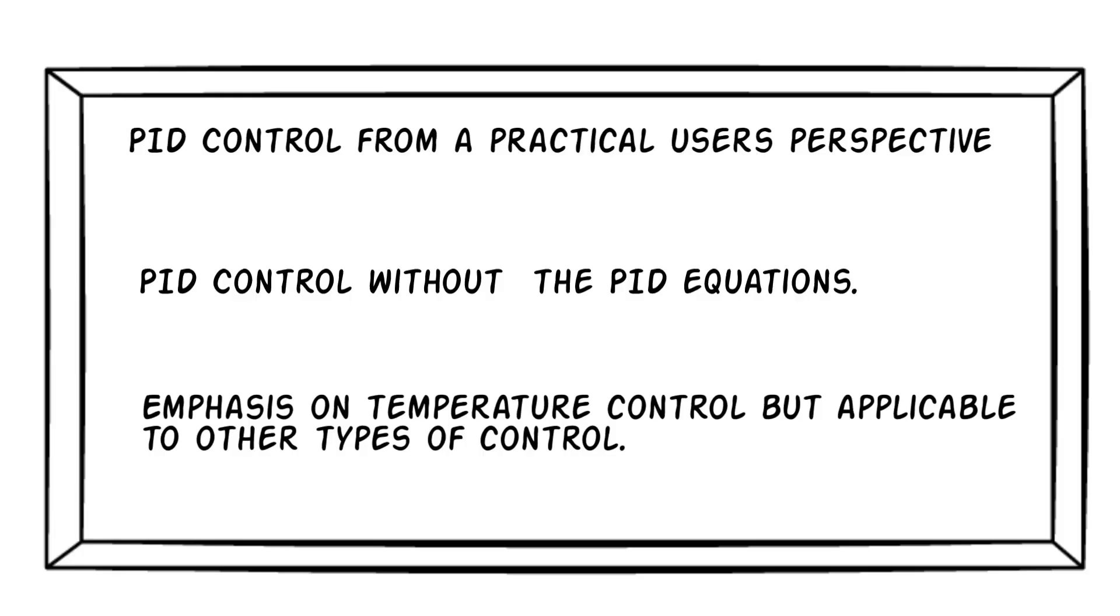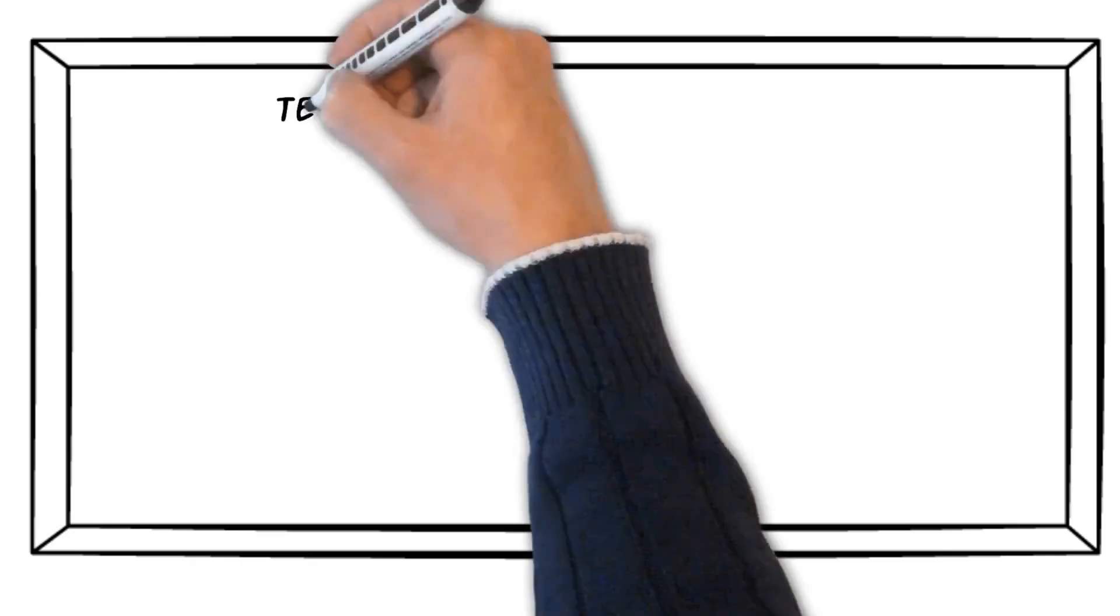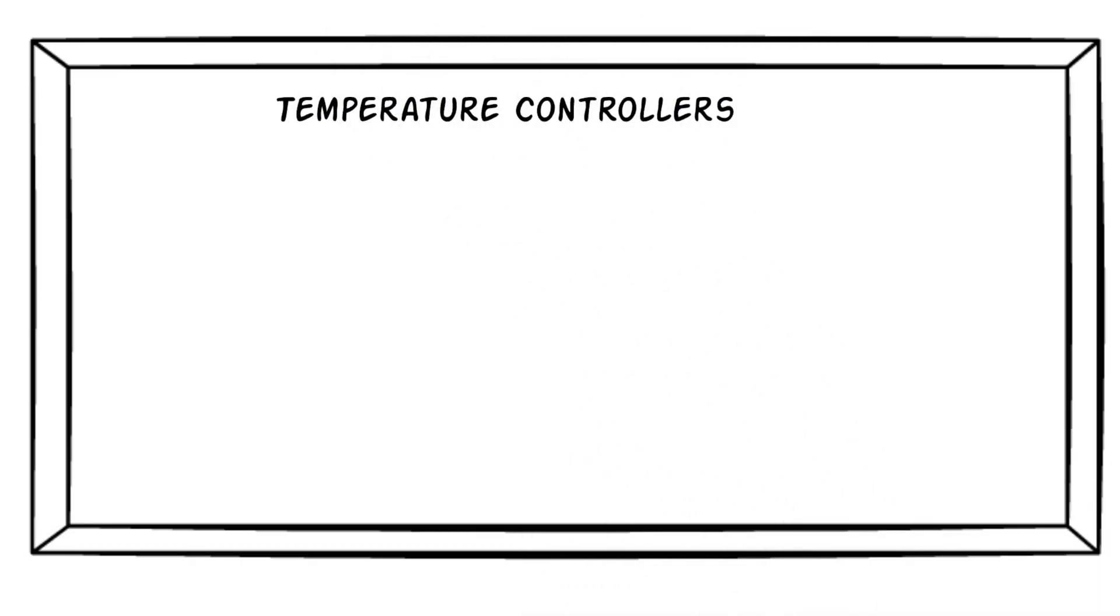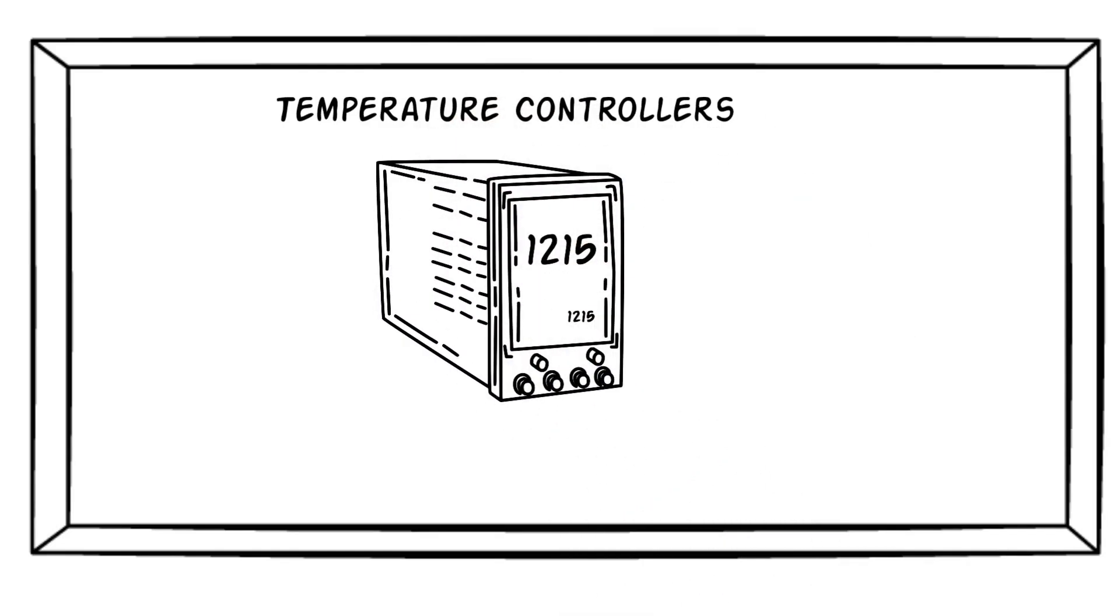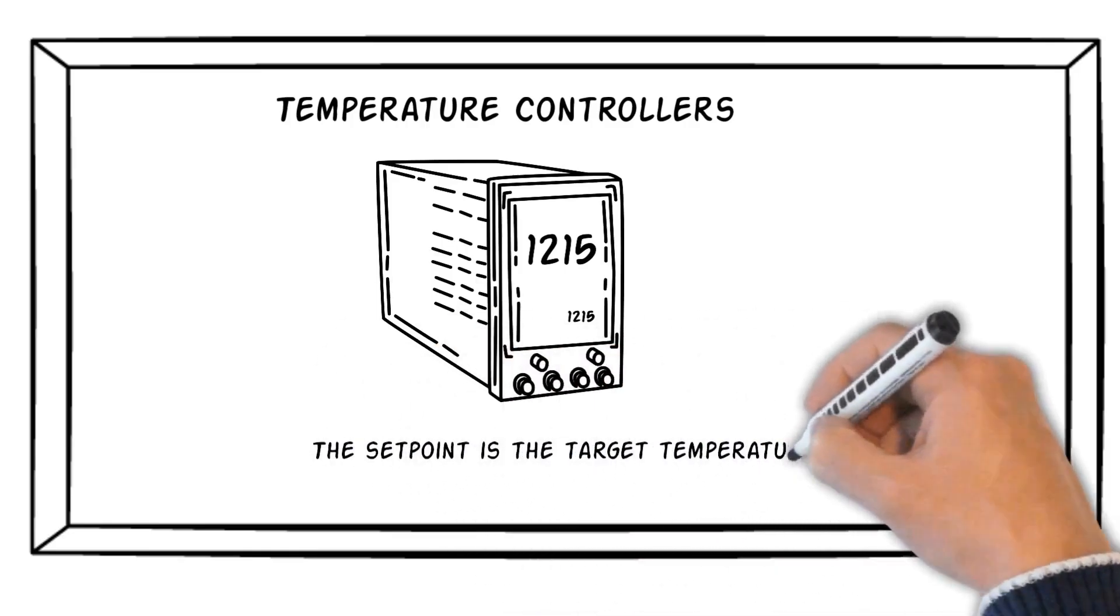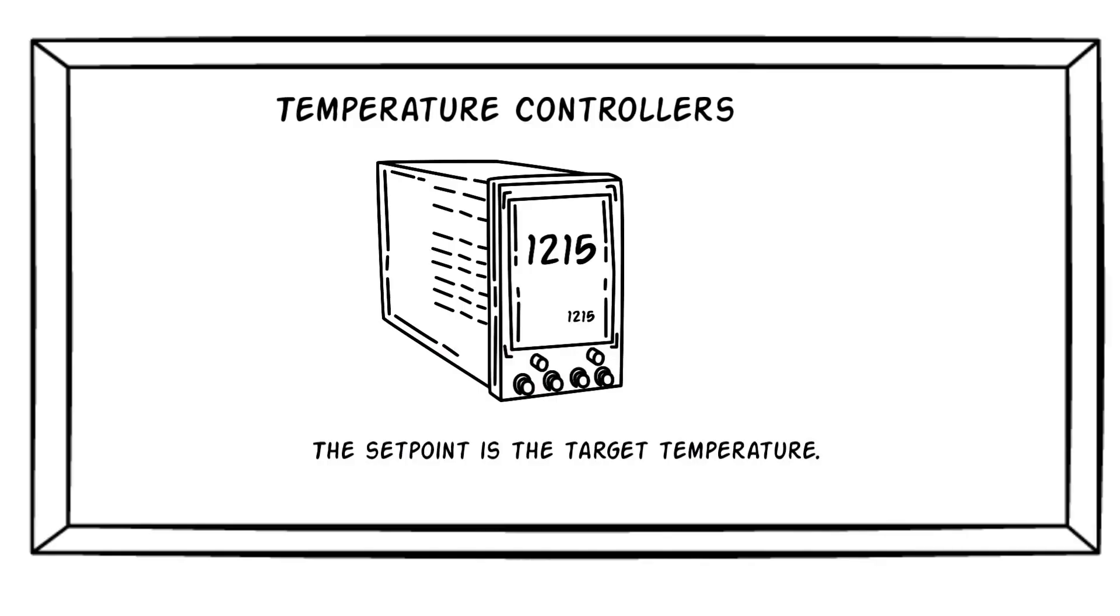These smart instruments are called temperature controllers. Modern temperature controllers are microprocessor-based instruments which contain the logic to control the temperature of a process. And what I mean by control is the action that drives the temperature of a process to a desired temperature level. This temperature level is called the set point.